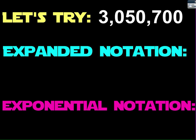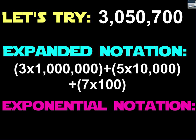Let's try one more. We have 3,050,700. The expanded notation would be 3 times 1,000,000 plus 5 times 10,000 plus 7 times 100.